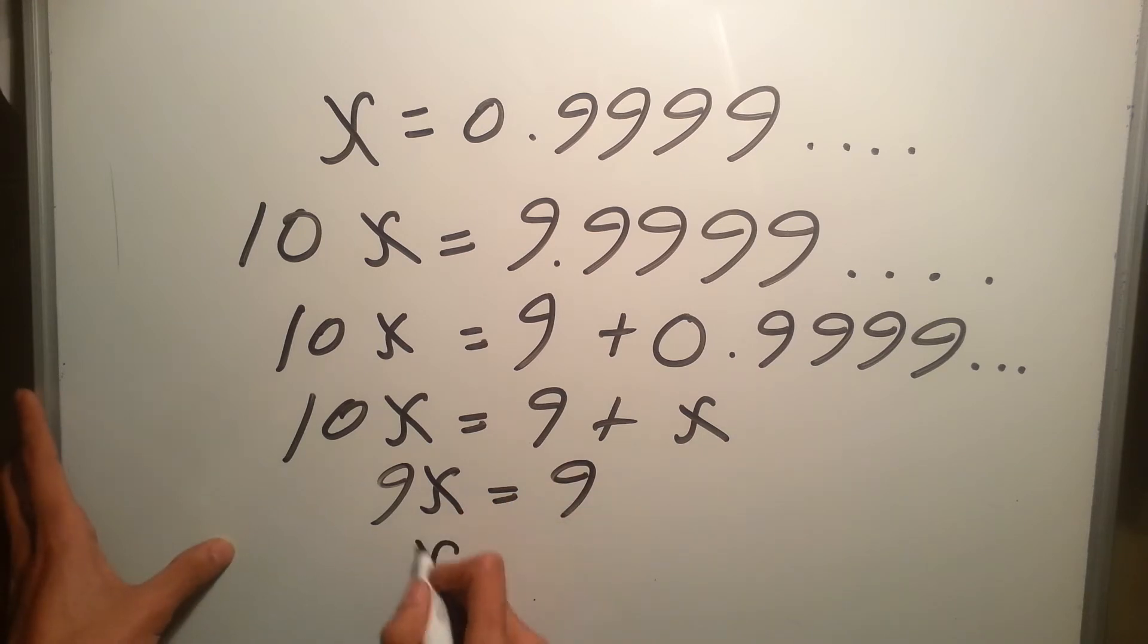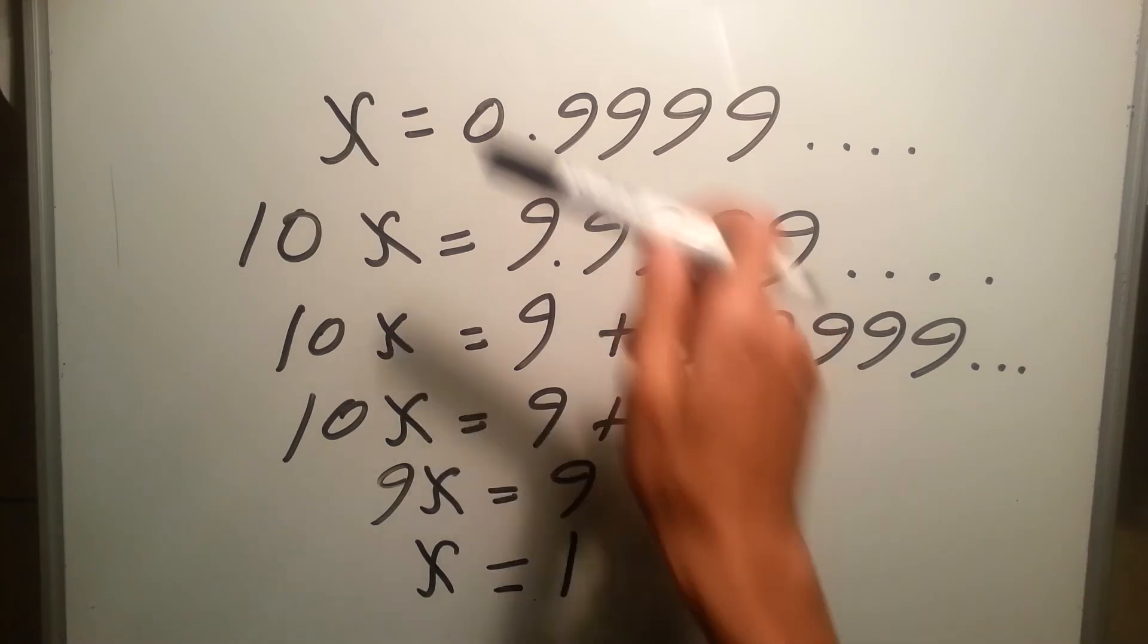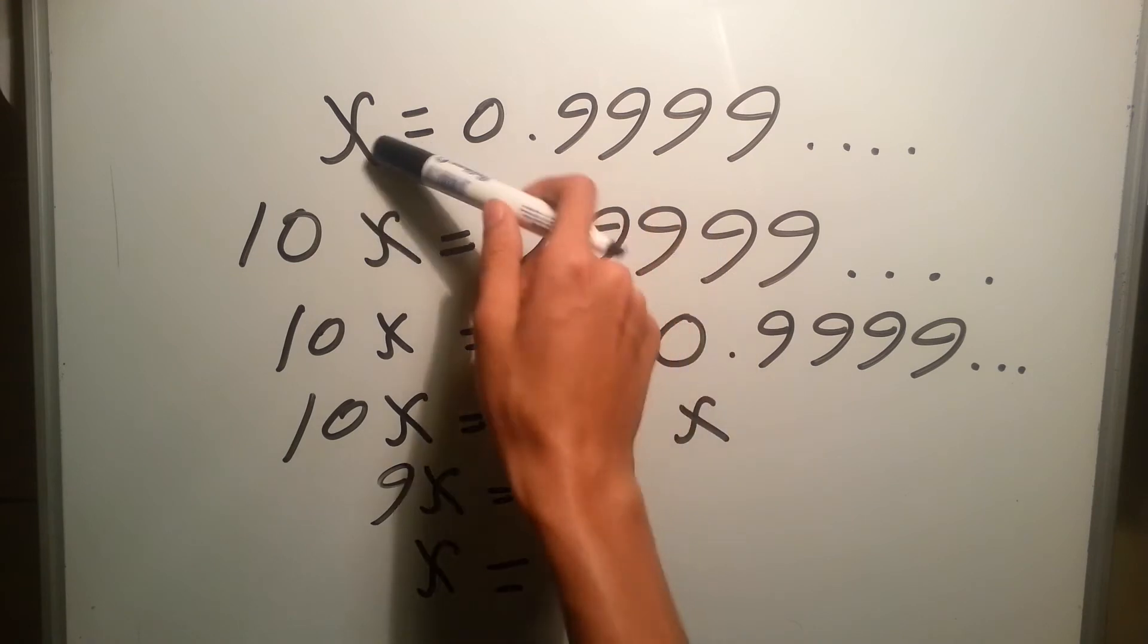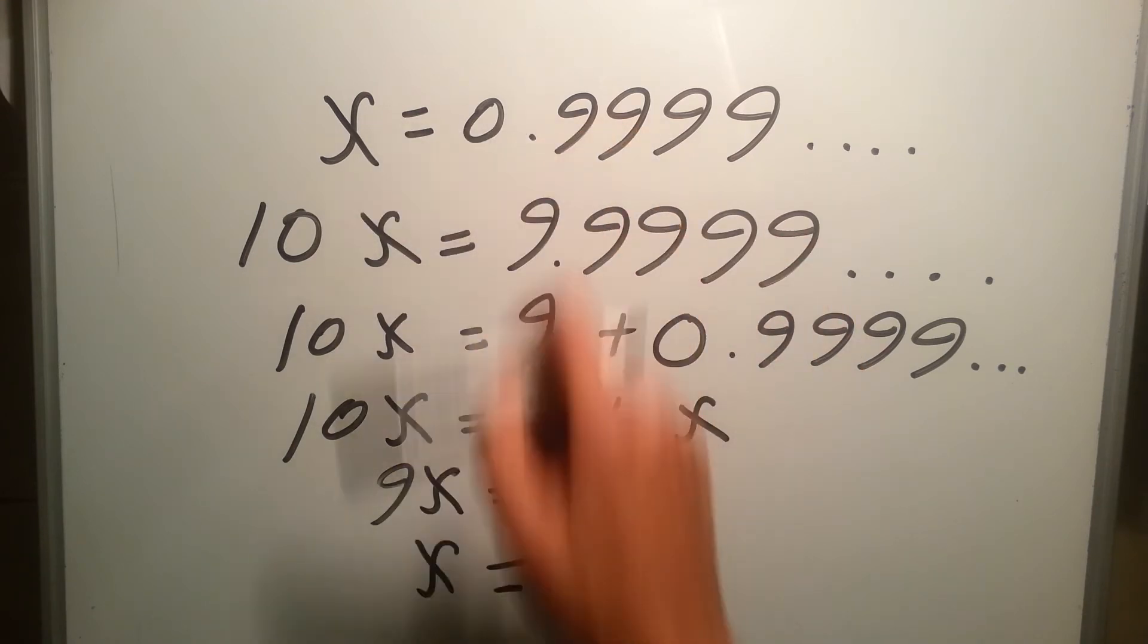And if you divide, you take 9 to the other side, you'll end up having x equals 1, which basically means that these two are the same: x equals 0.999 and also x equals 1, which means that 0.99999 equals 1.